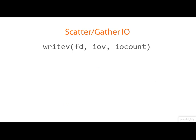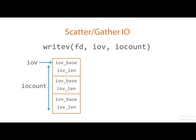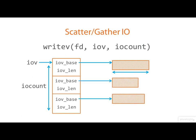The first argument to writev is an open file descriptor — just a plain old integer file descriptor. The second argument points to an array of iovec structures. Each structure in the array specifies a buffer to be written, giving its starting address and its length. Here, iocount is three, so there are three such buffers defined.